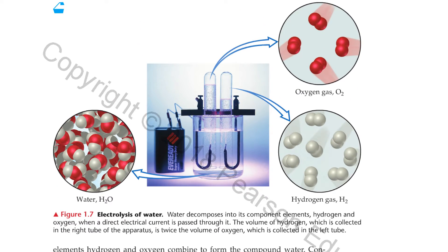Figure 1.7: Electrolysis of water. Water decomposes into its component elements, hydrogen and oxygen, when a direct electrical current is passed through it. The volume of hydrogen, which is collected in the right tube of the apparatus, is twice the volume of oxygen, which is collected in the left tube.